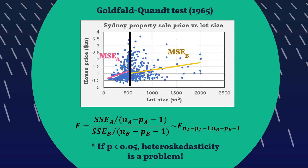In all your statistical software you'll find an ability to run a Goldfeld-Quandt test. You may need to provide a cut point, and it might also ask for a cutout region — a no-man's-land buffer between the two regressions that's in neither segment A nor B. Once you run it, all you need to do is look at the P-value it provides: if it's less than 0.05, heteroscedasticity is a problem at the 5% level of significance.